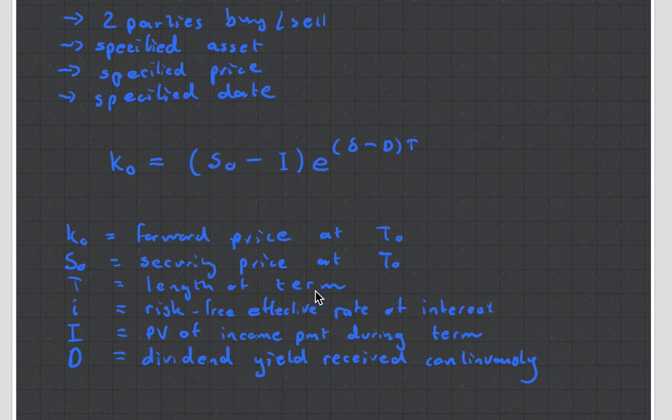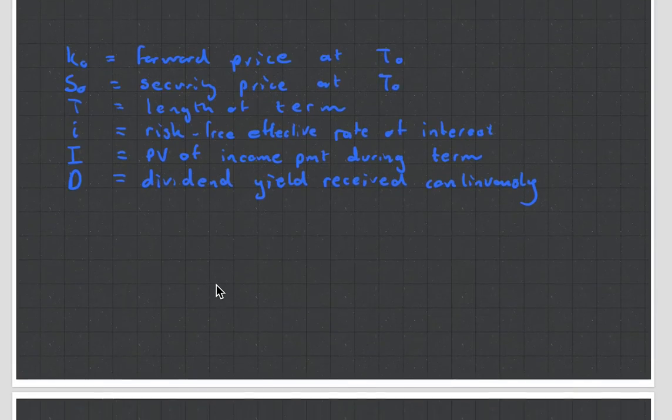We have the forward price at time zero. We have the security price at time zero, or the price of the apples. T would be the length of the term. I is the risk-free effective rate of interest, very important, that's risk-free. I would be the present value of income payments during the term. And D would be the dividend yield received continuously. Let's not worry about I and D too much.